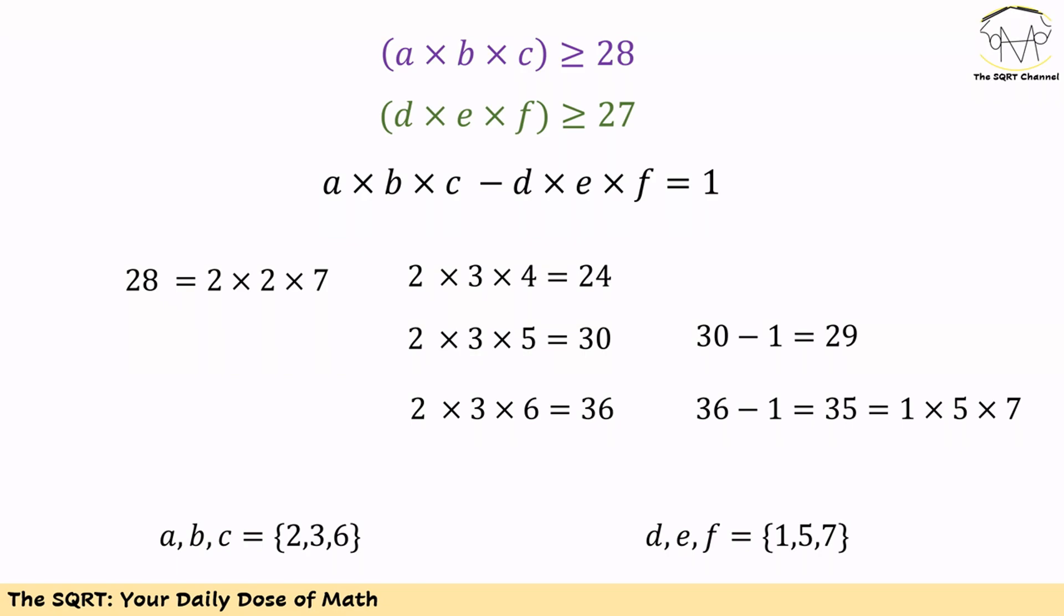Now let's move on and use 6 for C. If we do this, then A times B times C is going to be 36. 36 minus 1 is 35. Let's see if we can find values for D, E, and F. You can write it as 1 times 5 times 7. So we can say D is equal to 1, E is equal to 5, and F is equal to 7.